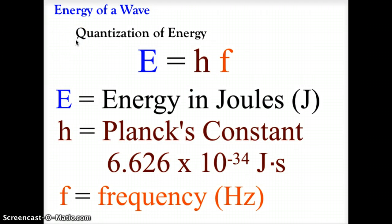We also have a second equation: the energy of a wave, given by E = hf, where E is energy measured in joules, h is Planck's constant — which converts from wave values (frequency in hertz) to energy in joules — and f is frequency in hertz. Planck's constant is always 6.626 × 10⁻³⁴ joule-seconds.